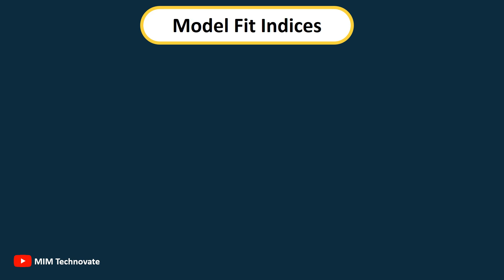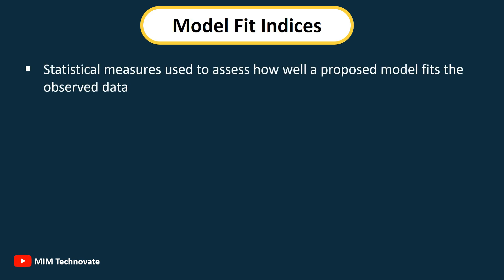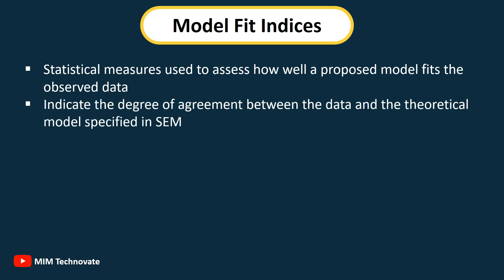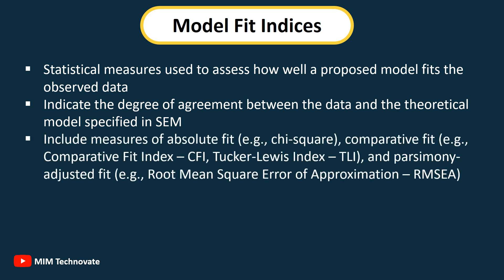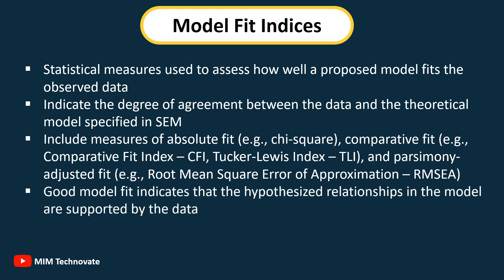Model Fit Indices: Statistical measures used to assess how well a proposed model fits the observed data. They indicate the degree of agreement between the data and the theoretical model specified in SEM. Common fit indices include measures of absolute fit (e.g., chi-square), comparative fit (e.g., CFI, Tucker-Lewis Index/TLI), and parsimony-adjusted fit (e.g., Root Mean Square Error of Approximation/RMSEA). Good model fit indices indicate that the hypothesized relationships in the model are supported by the data.